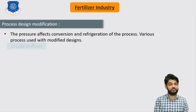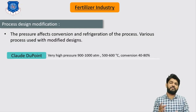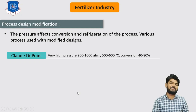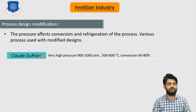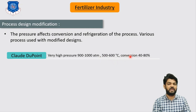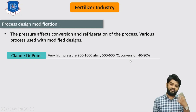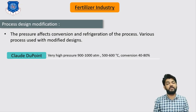Now looking at process design modifications — different processes have been adopted varying in process conditions. The Claude process uses very high pressure of 900 to 1000 atmospheres and temperature of 500 to 600°C, giving high conversion of 40 to 80%. In comparison, the previous video noted only 8 to 30% conversion at standard Haber conditions.